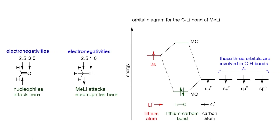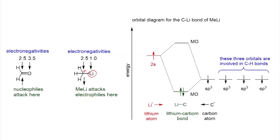As you can see in this slide, if you look at the structure of methyllithium, the electronegativity of lithium is 1.0 and carbon is 2.5, so this sigma bond pair is polarized towards carbon. In other words, this carbon is nucleophilic in nature, lithium is electropositive, and this carbon can act as a nucleophile. Wherever you have an electrophile it can undergo addition or substitution reactions.